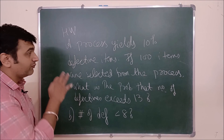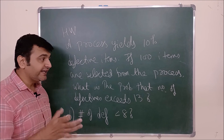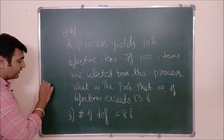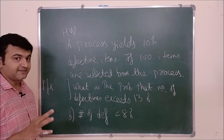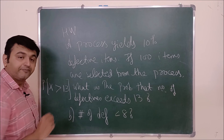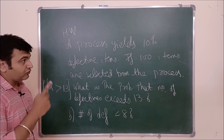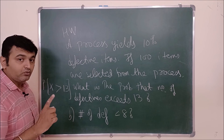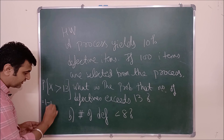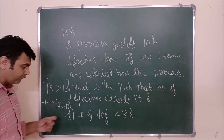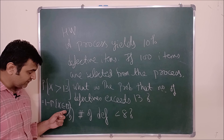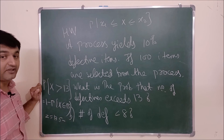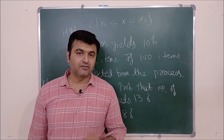Here is a homework problem: a process yields 10% defective items and 100 items are selected. What is the probability that the number of defective items exceeds 13? Let X be the number of defectives. Probability(X > 13) = 1 − probability(X ≤ 13). Your N is 100, P is 0.1 (getting a defective is a success), Q is 0.9. The Z score for 13 will be: (13.5 − NP) / √(NPQ) = (13.5 − 100×0.1) / √(100×0.1×0.9). If you have any doubt, you can ask me in the comment section. Thank you.